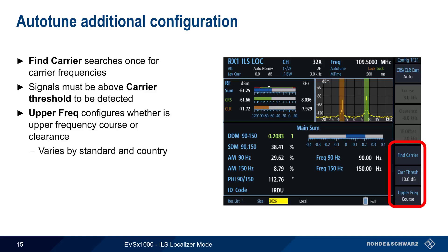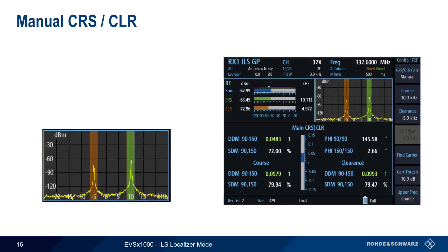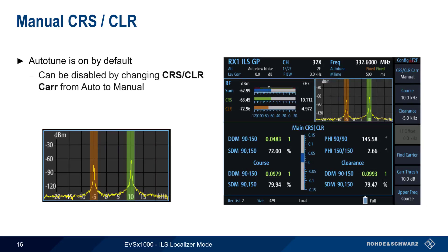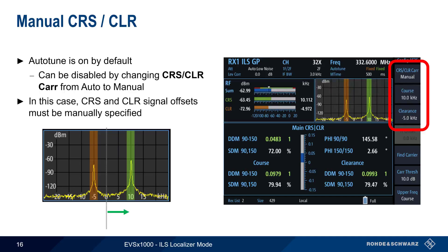The upper frequency setting specifies whether the higher frequency carrier is the course signal or the clearance signal, which can vary between standards and in different parts of the world. AutoTune for course and clearance is enabled by default, but it can be disabled by changing the course/clearance carrier setting from Auto to Manual. In that case, the offsets for course and clearance must be manually specified — for example, the course signal 10 kHz above and the clearance signal 5 kHz below the nominal localizer frequency.